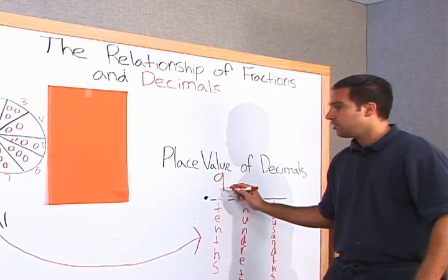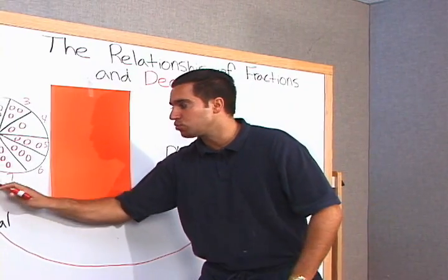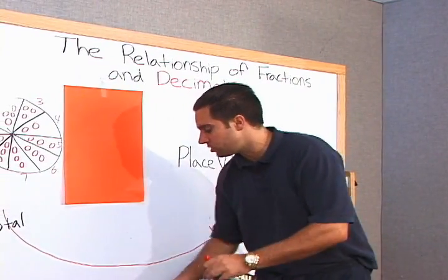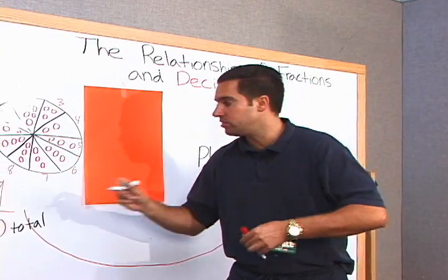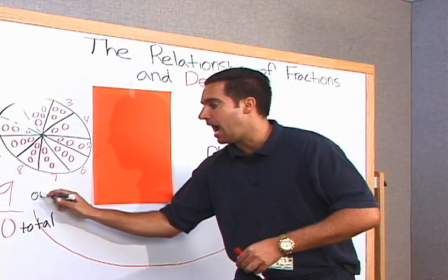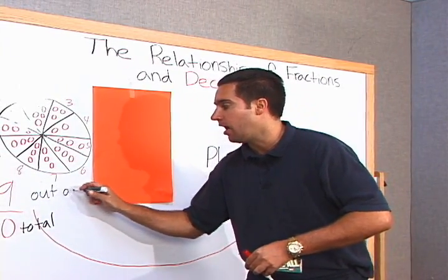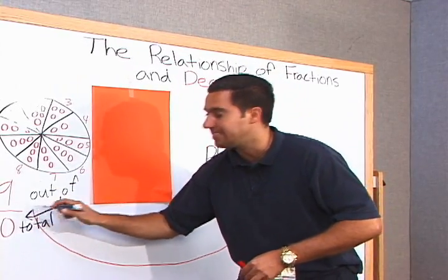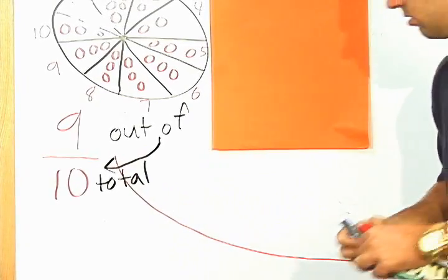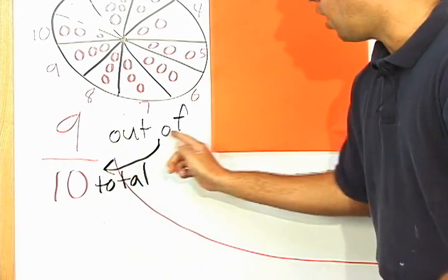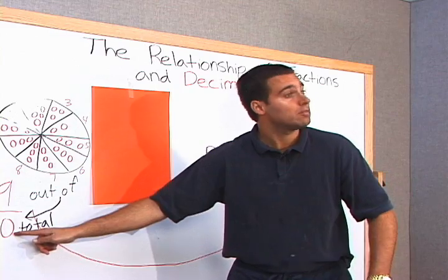So we have nine, and let's put those words there again, those key words, nine out of, out of what? Out of ten. Nine out of ten. That's the fraction. Now let's write the decimal.